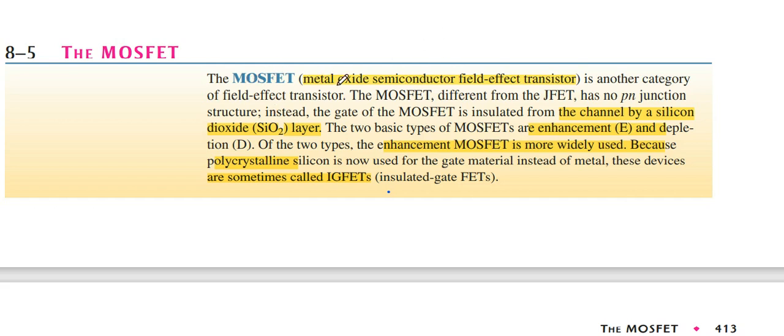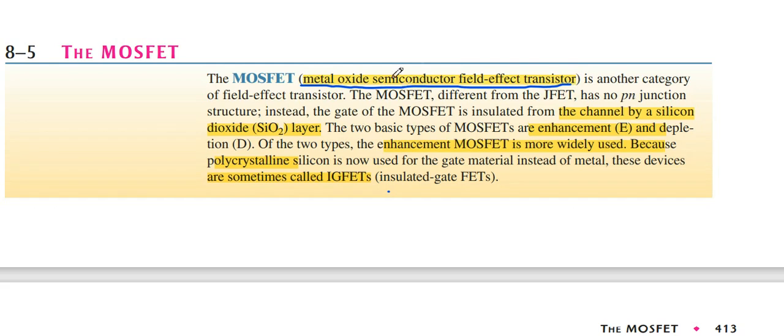MOSFET is the metal oxide semiconductor field effect transistor. There are two types of MOSFET: enhancement MOSFET and depletion MOSFET. There is a big difference between MOSFET and JFET due to no PN junction structure, and MOSFET has the gate connected through an insulator layer of silicon dioxide.